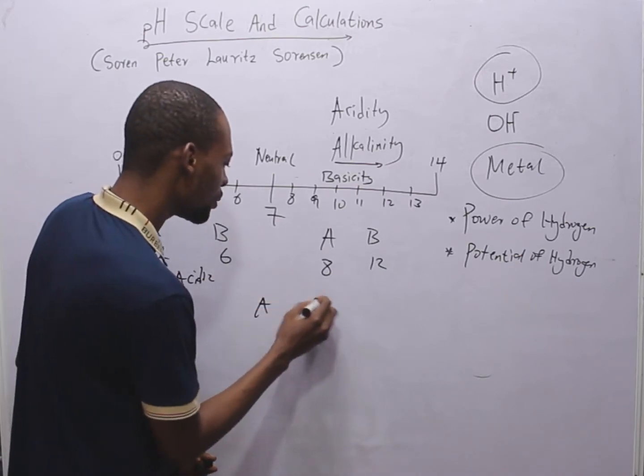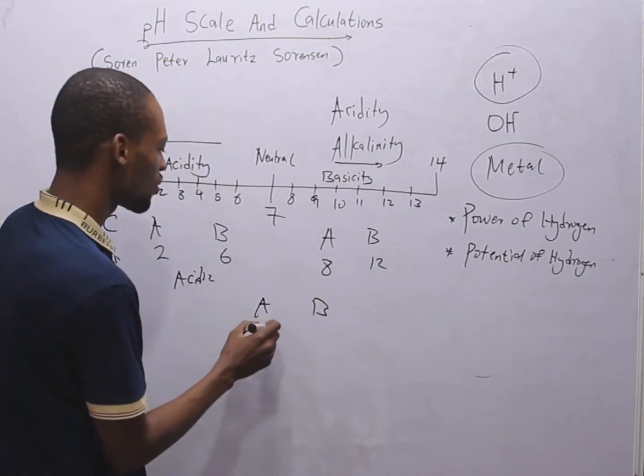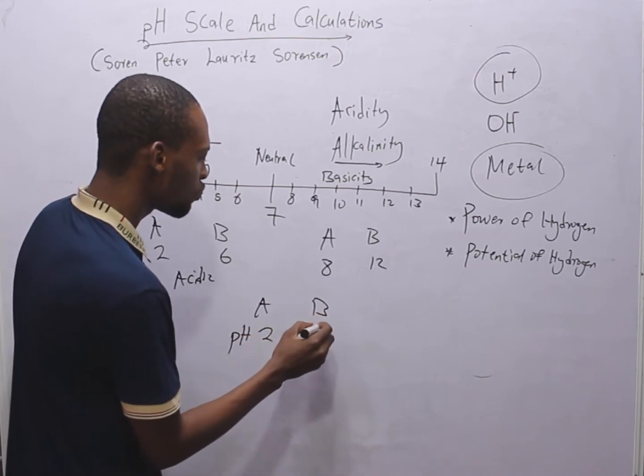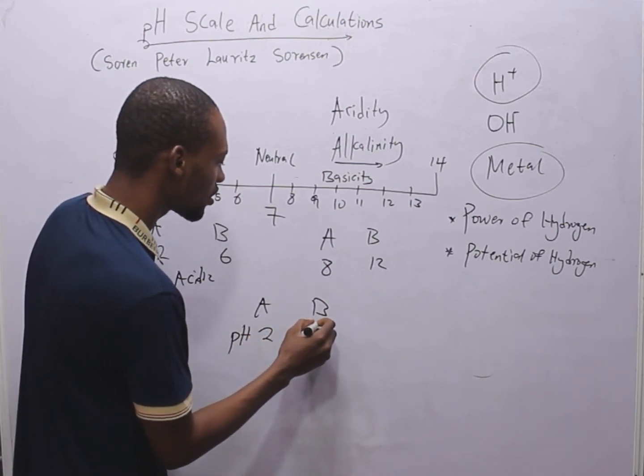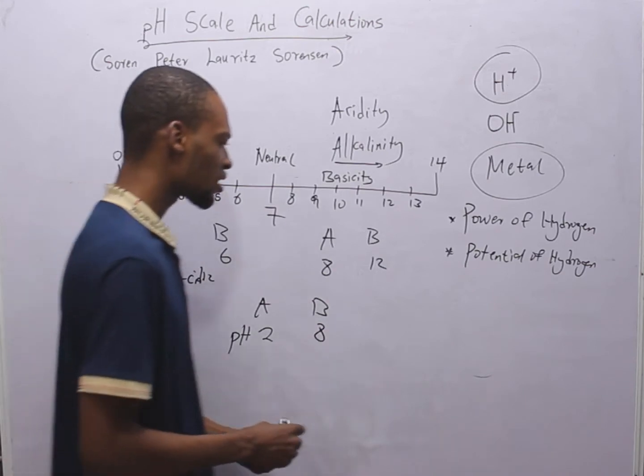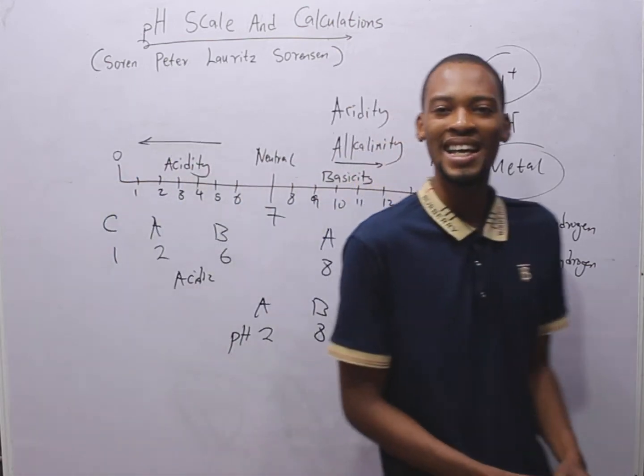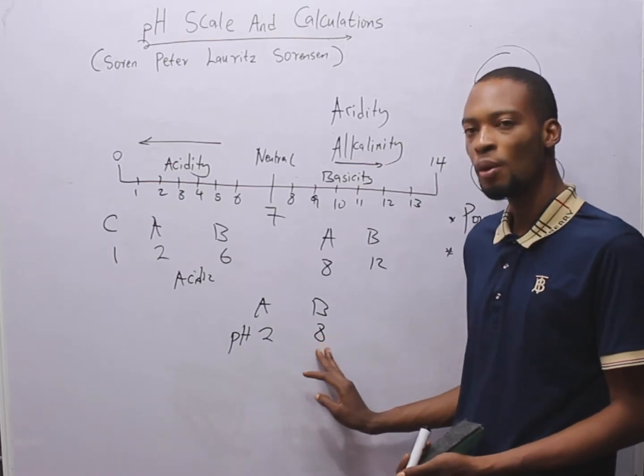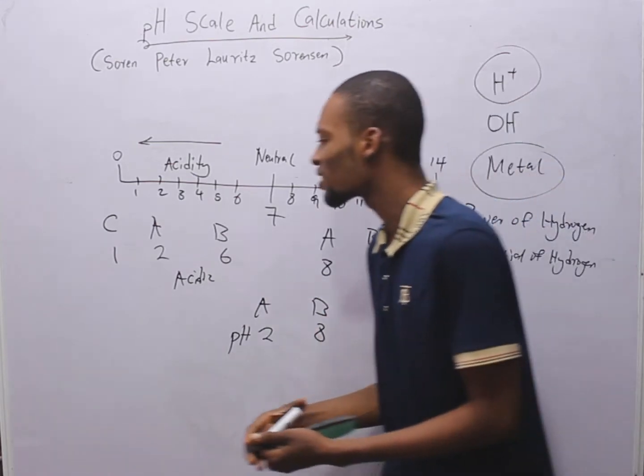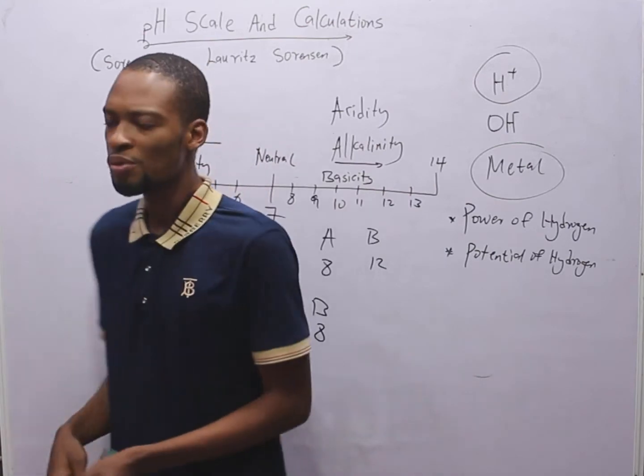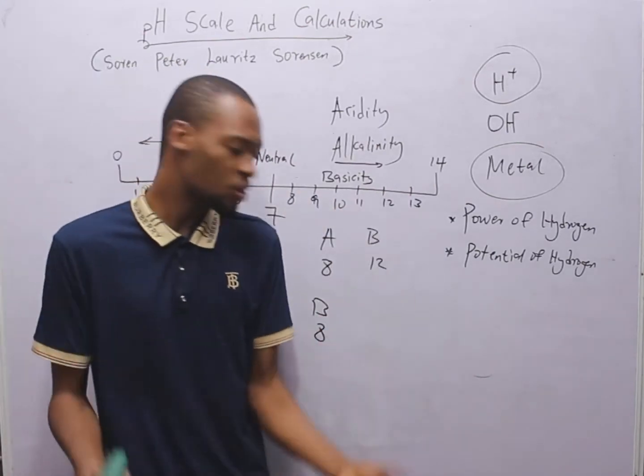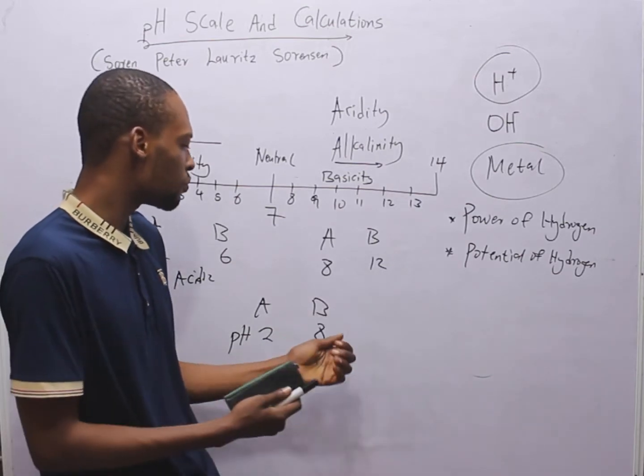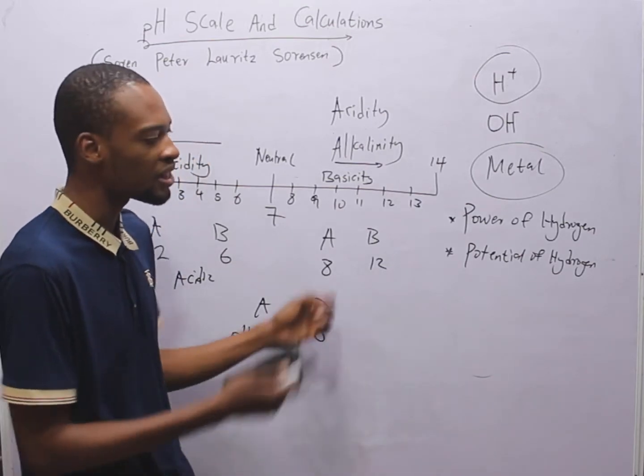Now, if you have A and B, solution A with pH two, B with pH eight. And you are asked, which of the solution has a higher pH? B has a higher pH. You follow the number. Now, if you are asked, which of the following is true? It is actually true that A is more acidic than B. It is also true that B is more basic than A.